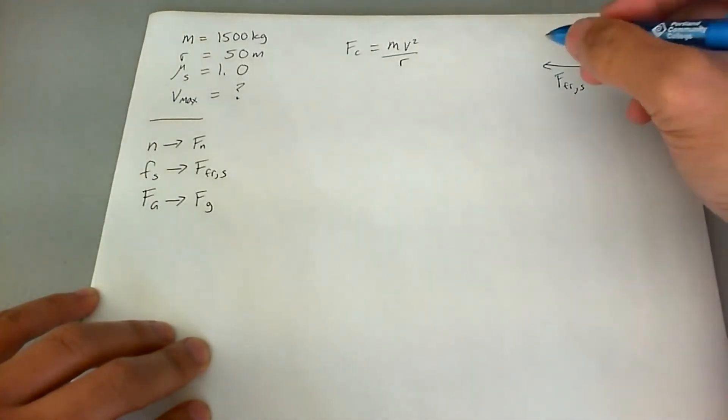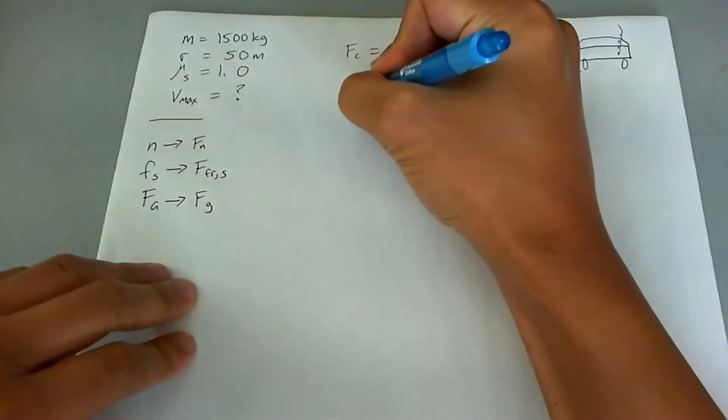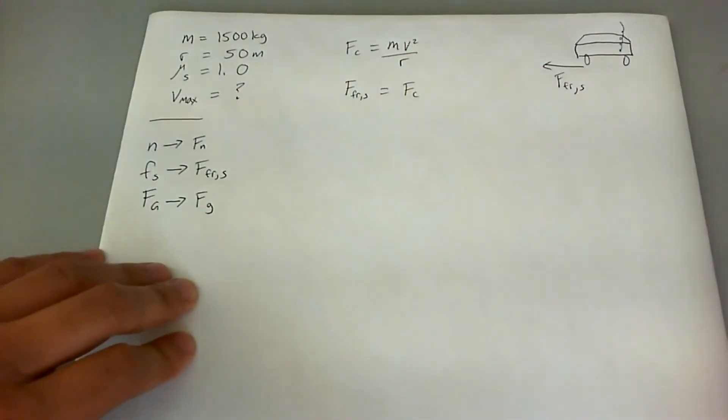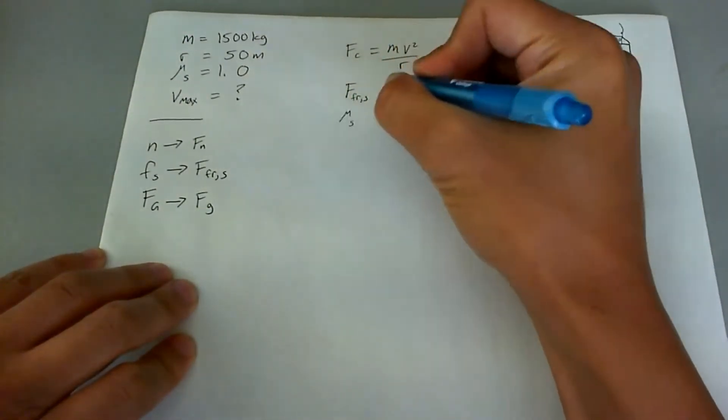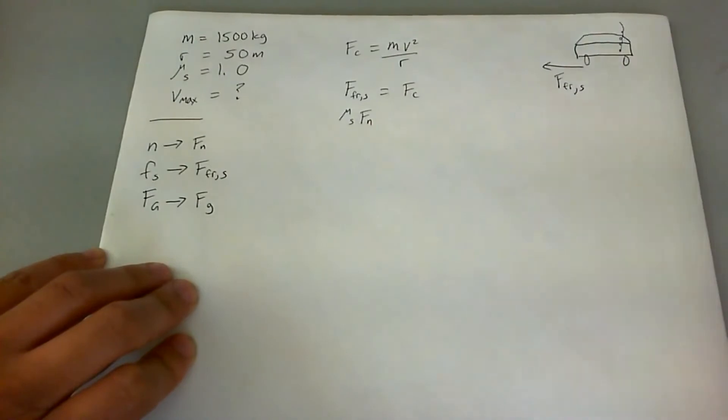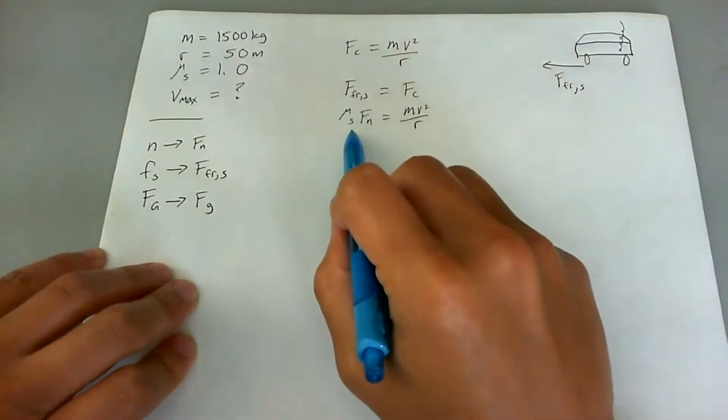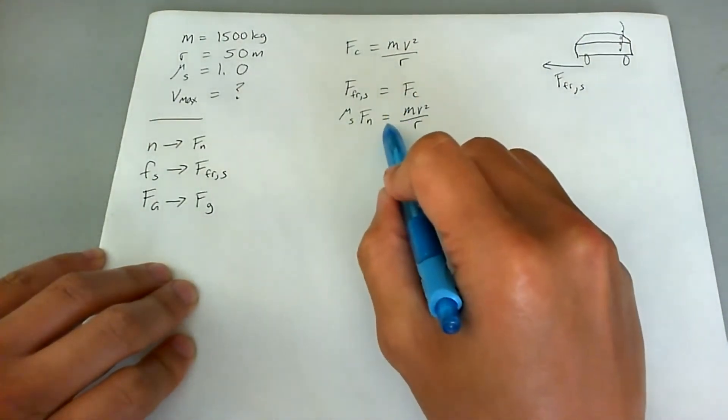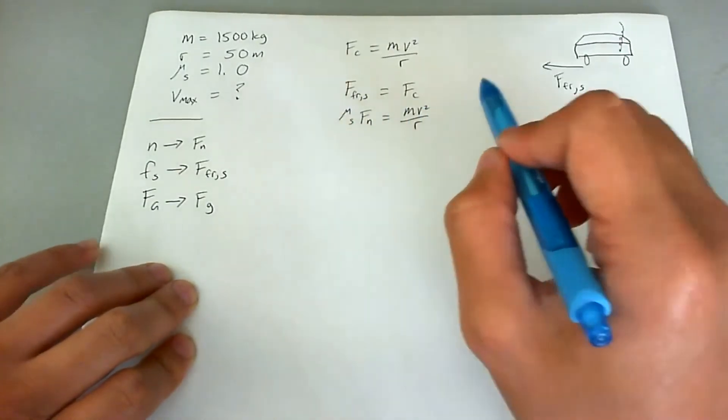Since we know that the static friction force, the max static friction force is centripetal force, then we can say that the static force equation is going to be the centripetal force equation. So that would be mu sub s times f sub n equaling to mv squared over r. Again, we're saying that centripetal force on this side here is the static friction force. Static friction force is the centripetal force.